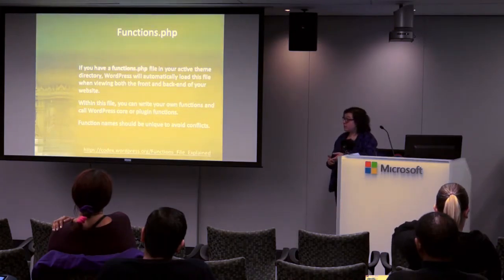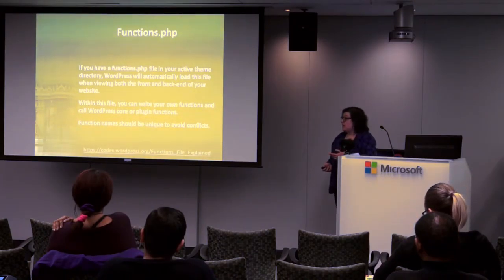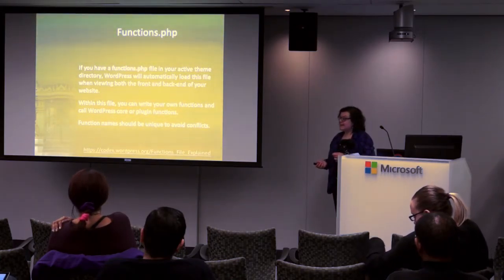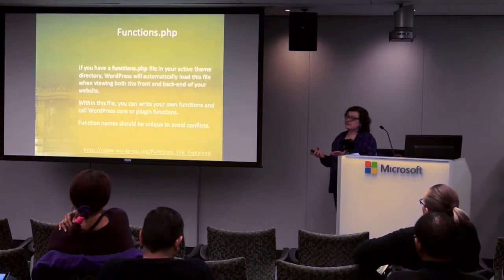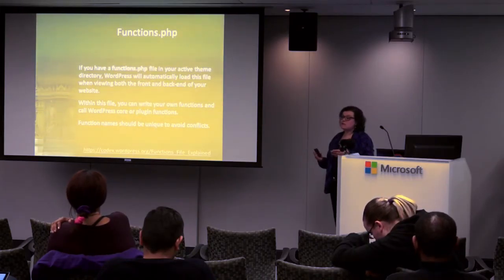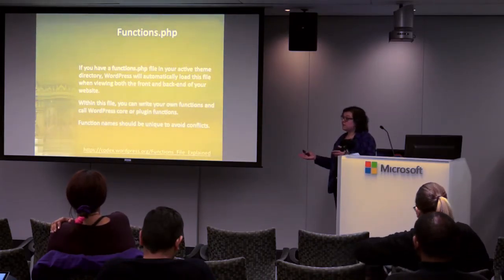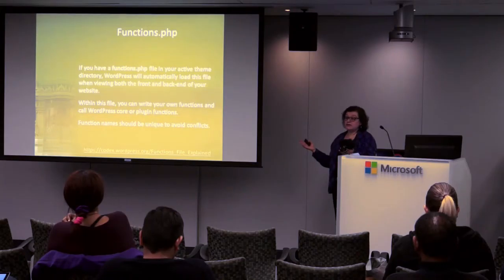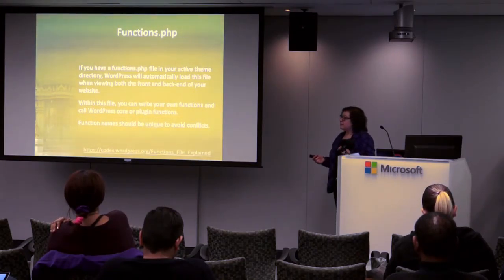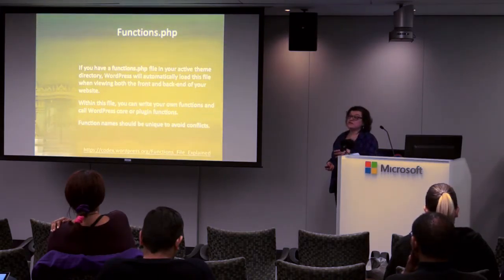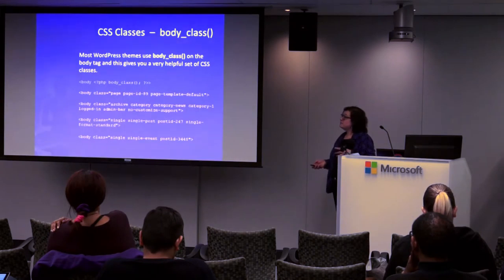Within functions.php you can write your own functions and access WordPress's core or plugin functions through hooks. When writing function names, make them unique — put a prepend with the name of your theme or something specific. Every plugin you have loaded also has a number of functions, and if two functions have the same name — say both called get_image — you're going to have a conflict, and when you have two functions with the same name you'll blow up your site.